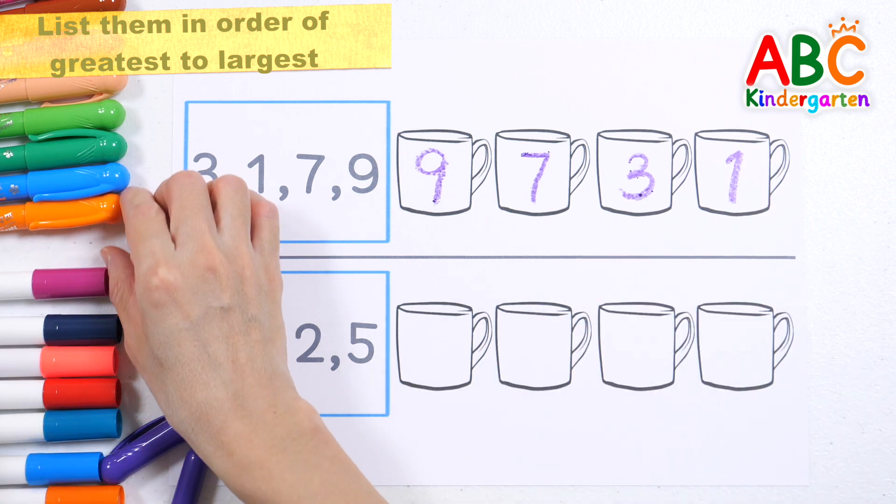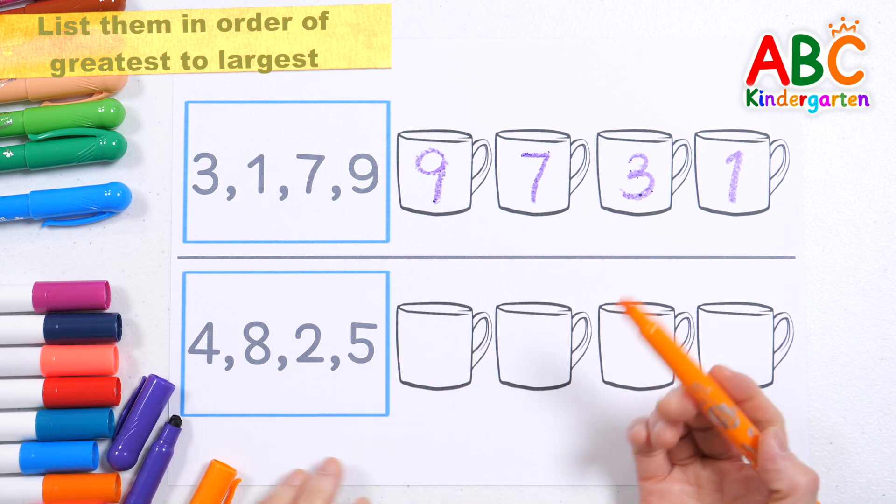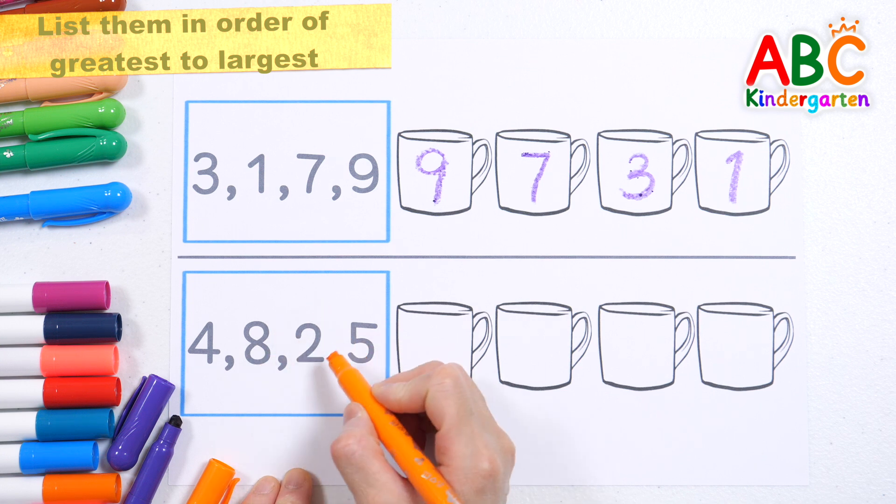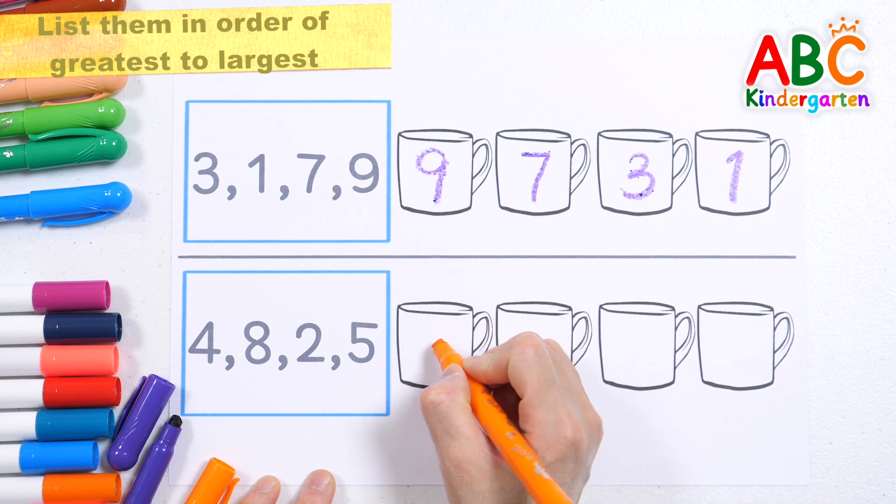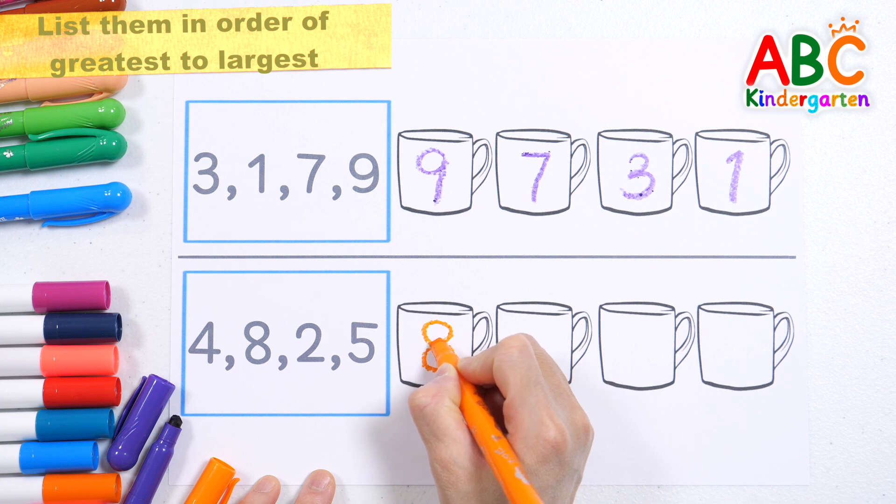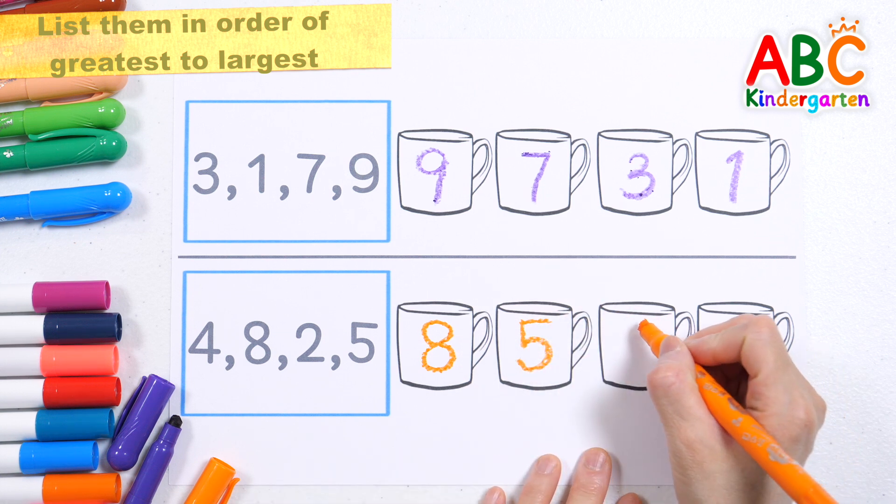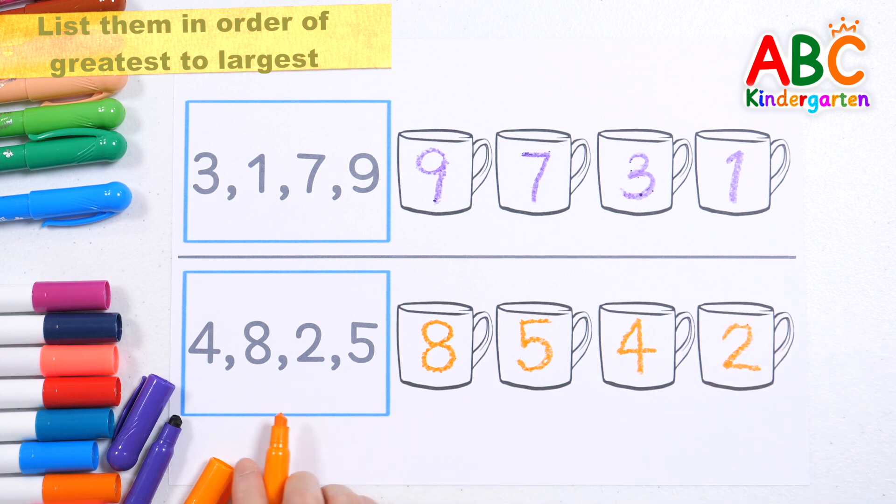Let's write the numbers again in order from largest to smallest. Four, eight, two, five. Eight, five, four, two. Very good.